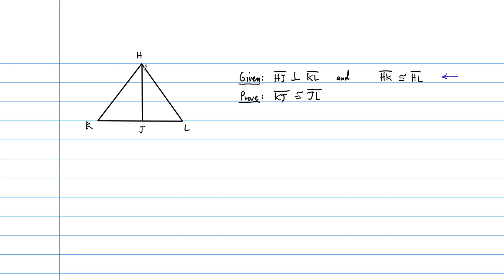One thing we can use is the definition of perpendicular — perpendicular means these form right angles, so we have two right angles here. That's one thing we want to write in our proof. I'll color code this: the perpendicular relationship was given to us, and the other thing given is that HK is congruent to HL.